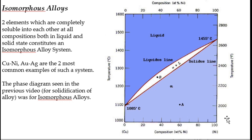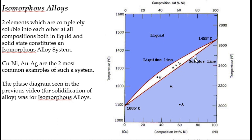In an isomorphous alloy, both elements are completely soluble in each other at all compositions. This copper-nickel binary diagram illustrates that. Above the liquidus line, everything is liquid. Below the solidus line, everything is solid—in solid state, copper and nickel are also completely soluble.